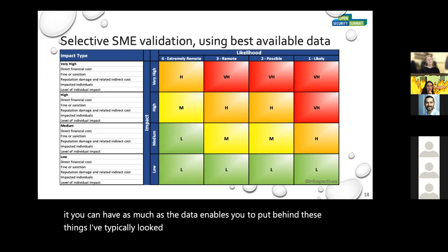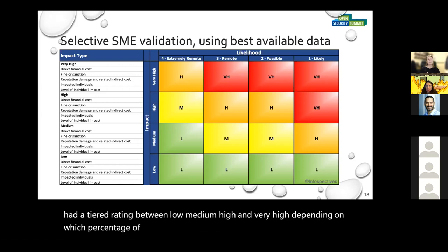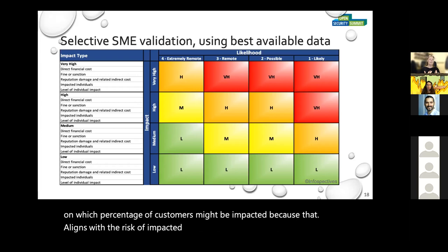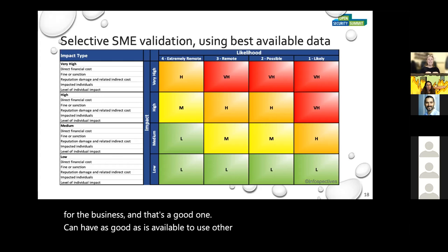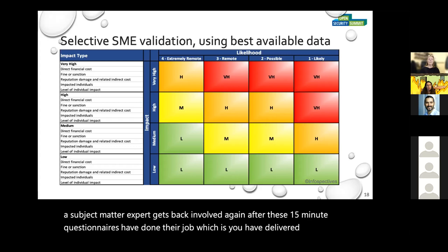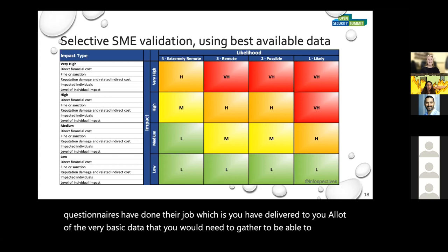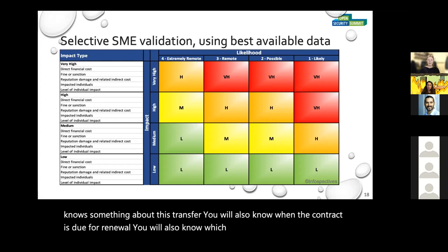I've typically looked at the complete number of customers and what percentage of the customer base is affected, then had a tiered rating between low, medium, high, and very high depending on which percentage of customers might be impacted — because that aligns with the risk of impact and also with the notification cost for the business. This is when a subject matter expert gets back involved again after the 15-minute questionnaires have done their job: you have delivered to you a lot of the basic data you need to start making expert judgment. You'll also know who to go back to who knows something about this transfer, when the contract is due for renewal, and which vendors are involved.